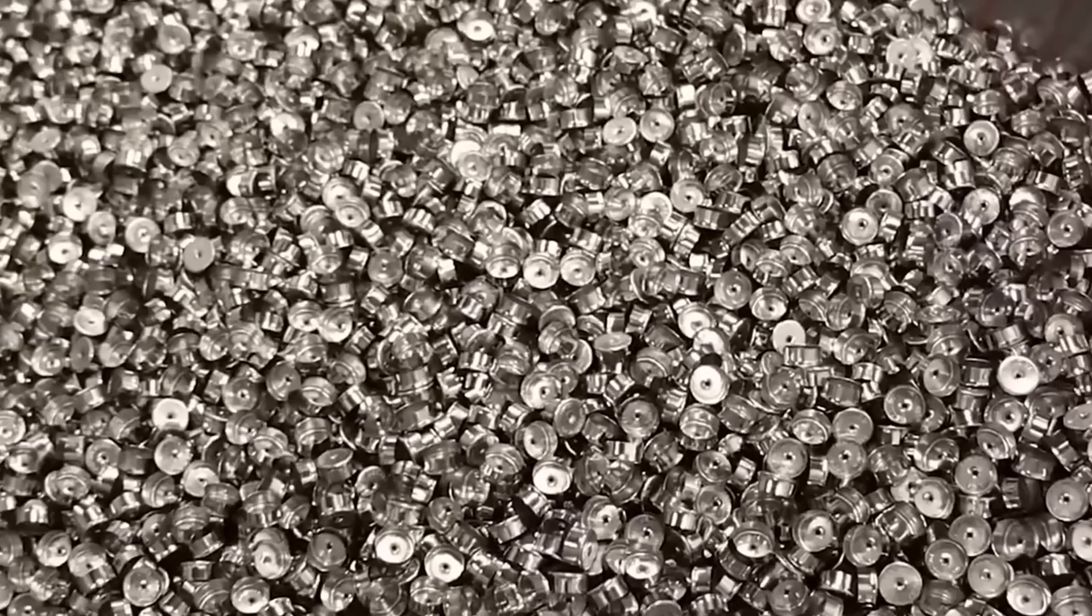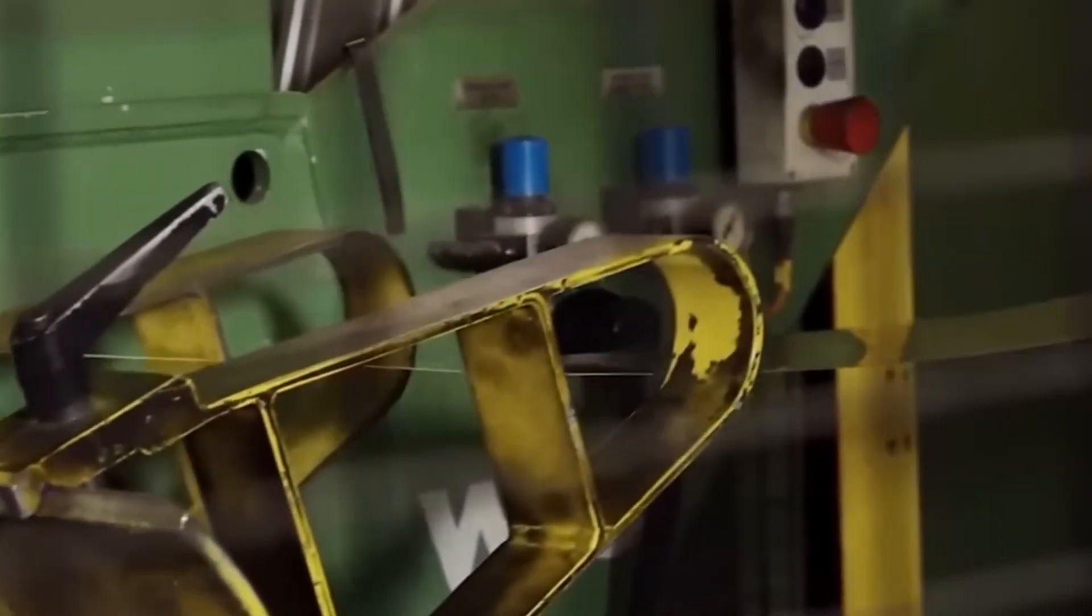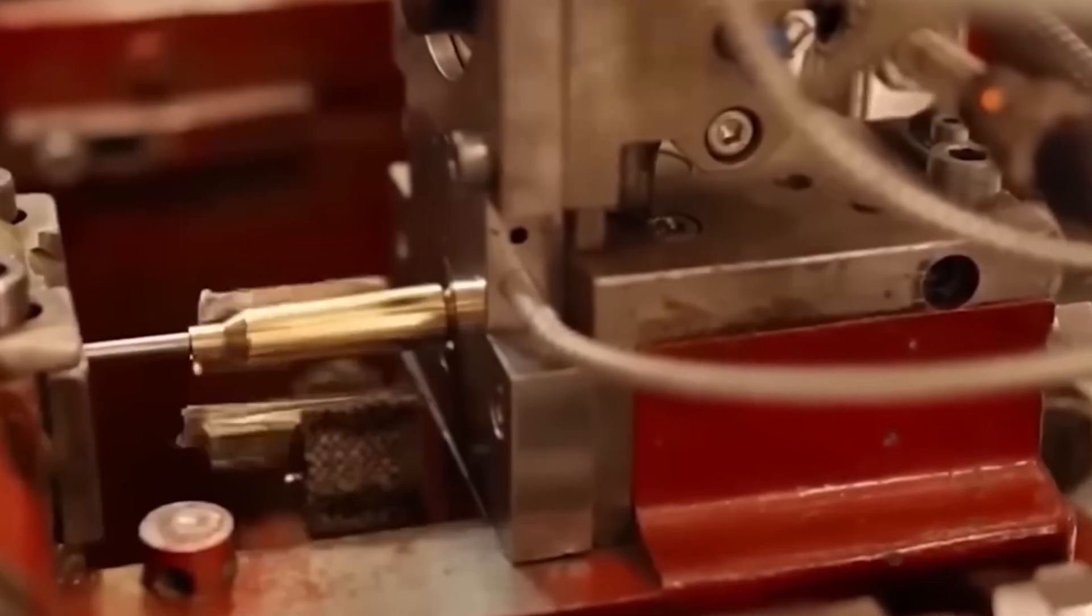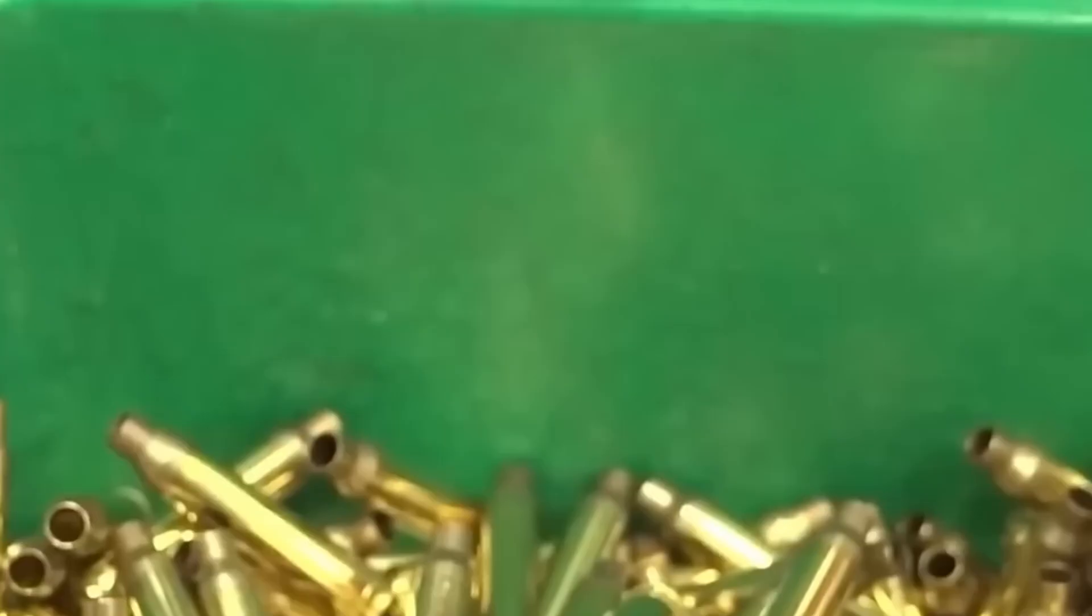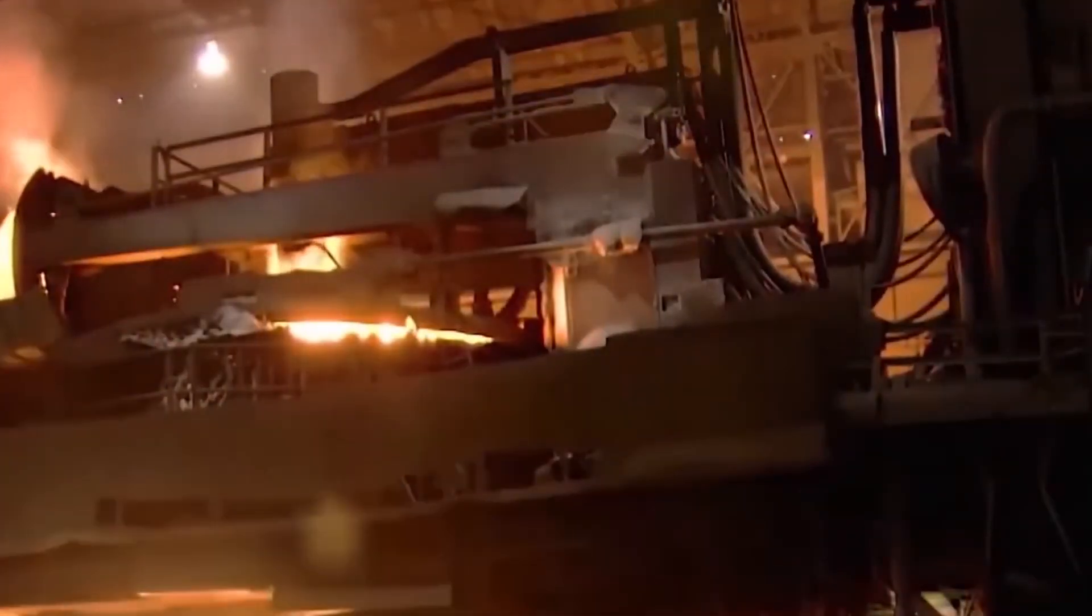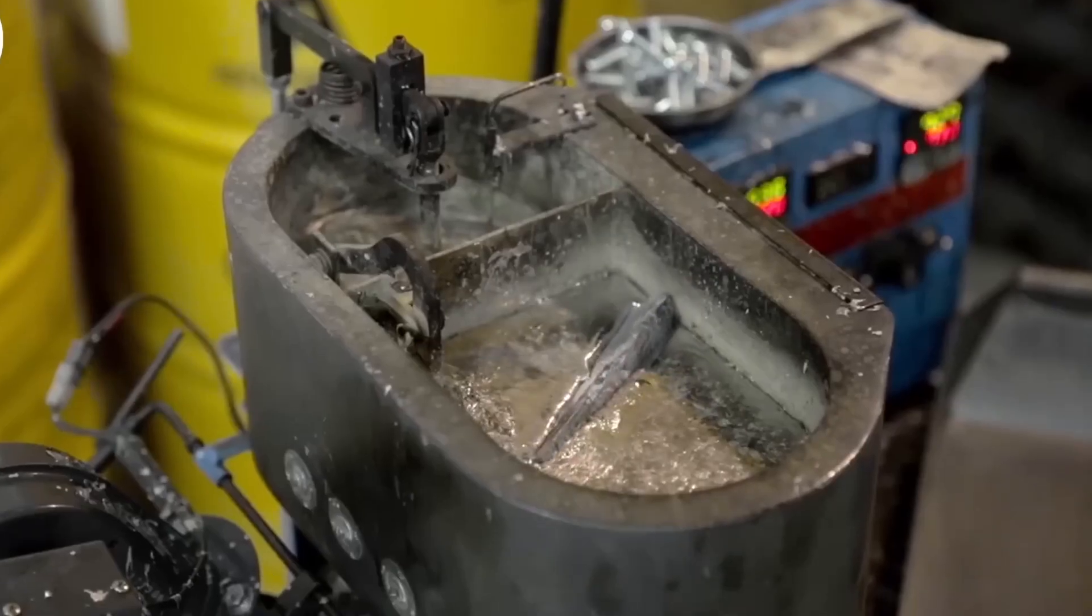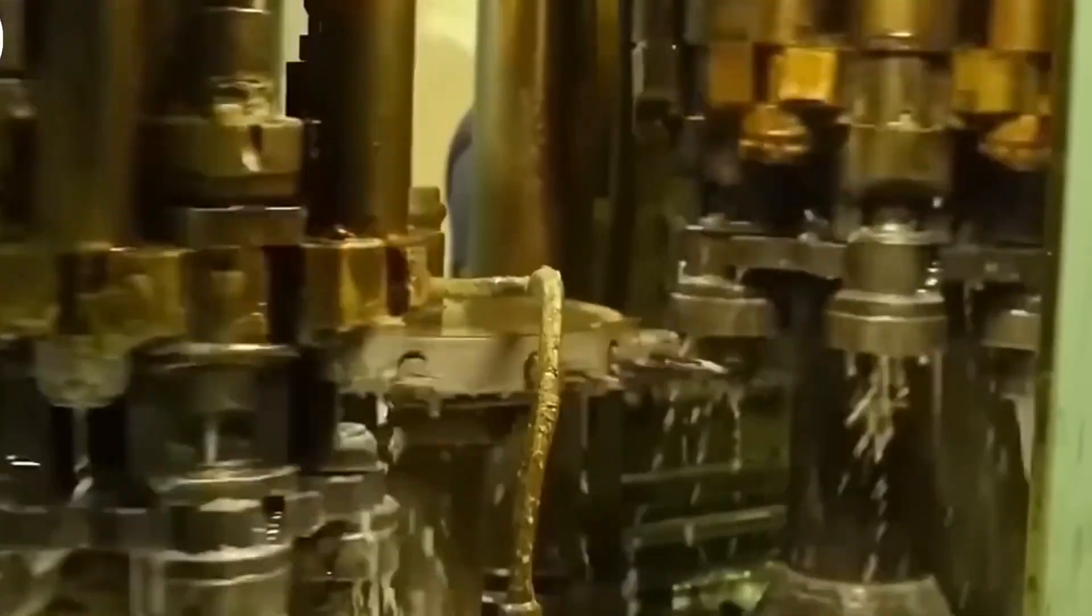Modern factories use optical inspection systems that check every case for proper dimensions and reject any that don't meet specifications. At Federal Premium Ammunition's Plant in Anoka, Minnesota, this brass forming process is so efficient that they can produce over 4 million cases per day. The machines operate continuously, with each stroke creating another perfectly formed brass case ready for the next stage of production.